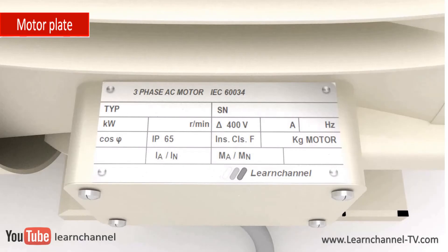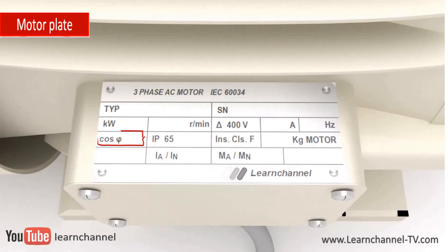To decide if this motor can be connected in delta or should be connected in star, you need the information about the rated motor voltage. In this case, the motor can be connected in delta within a 400-volt three-phase power supply. Because the motor coils are connected to AC, you need the information for the effective power factor. The rated input power, or electrical power, can now be determined by a simple equation.